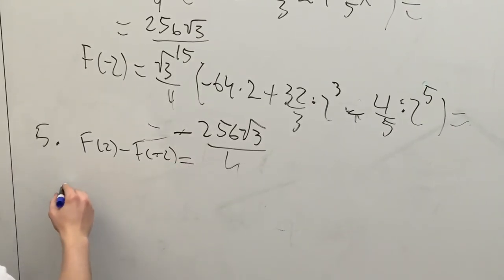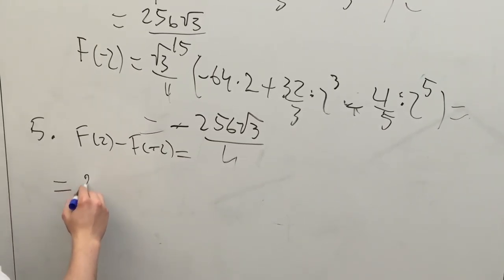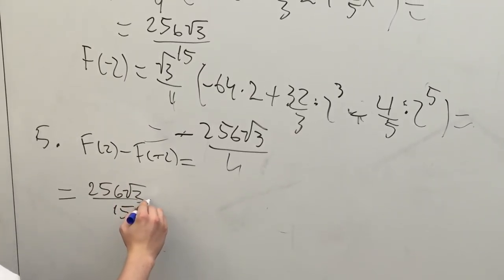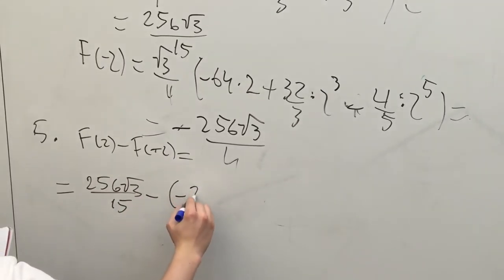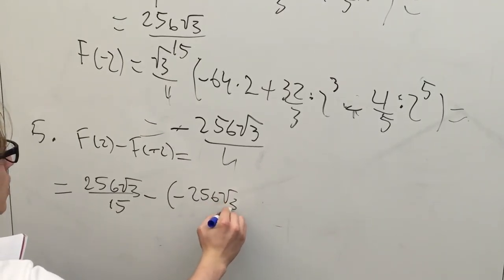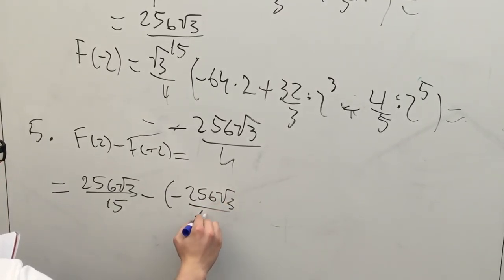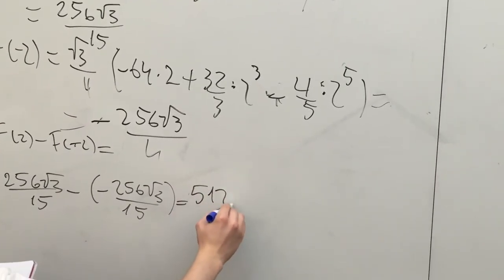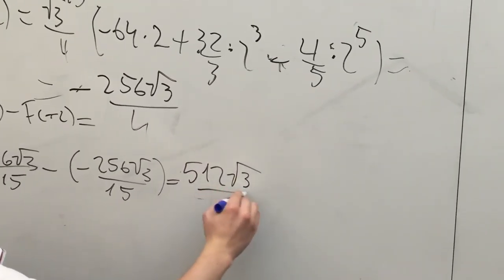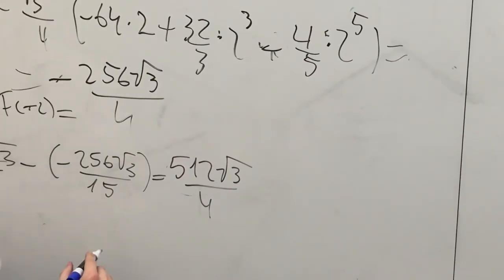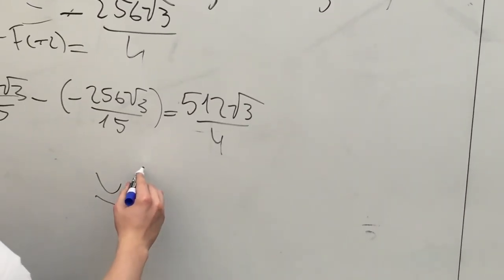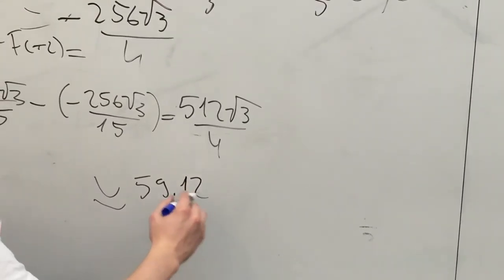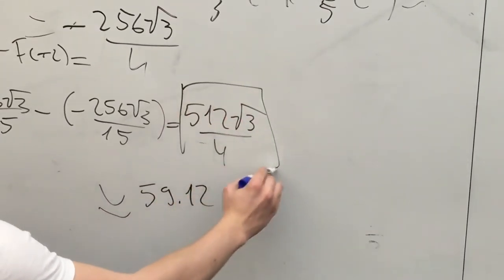To find the volume of the solid, we subtract F of negative 2 from F of 2, which equals 256 square root of 3 over 15 minus negative 256 square root of 3 over 15, which equals 512 square root of 3 over 15.